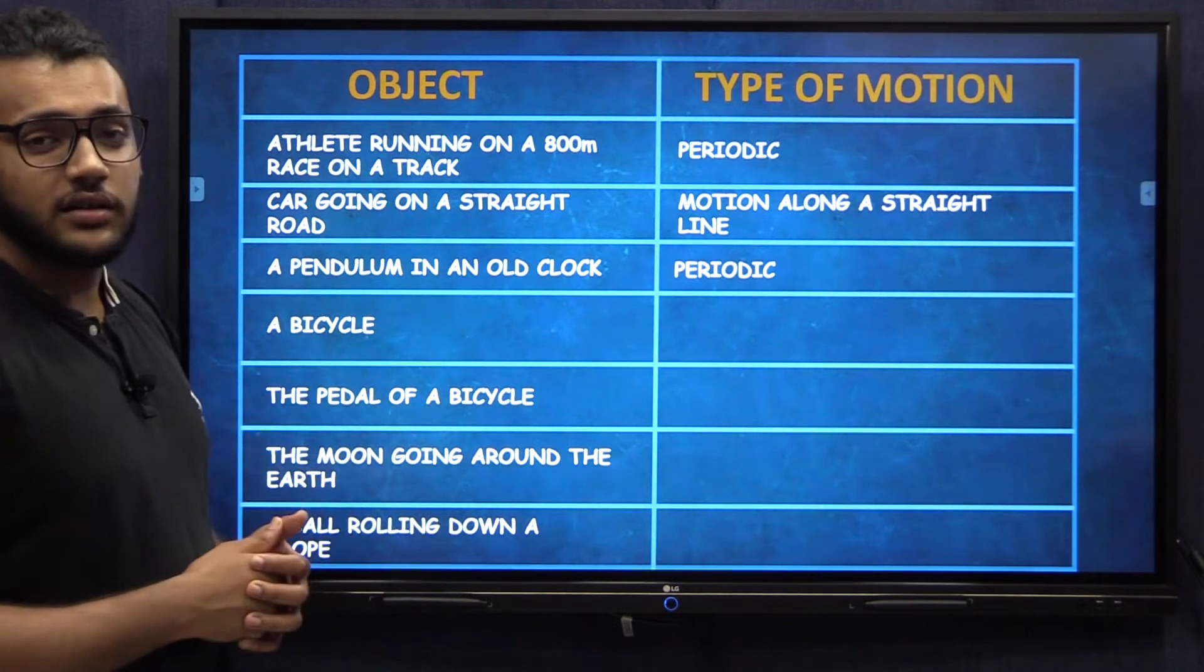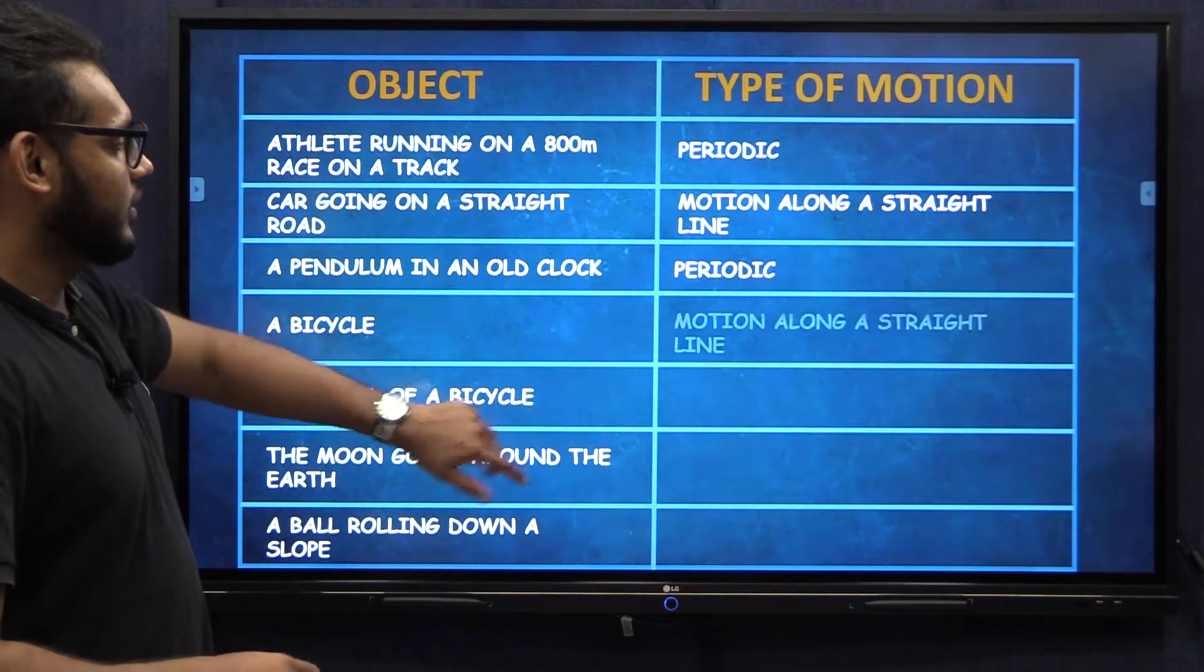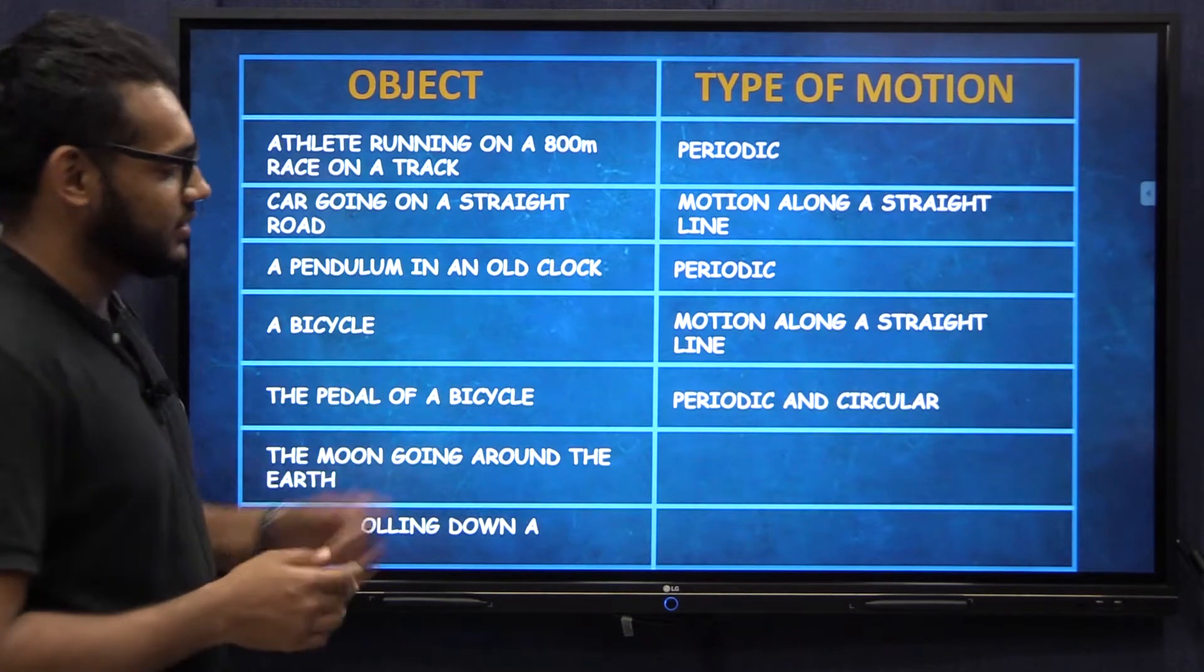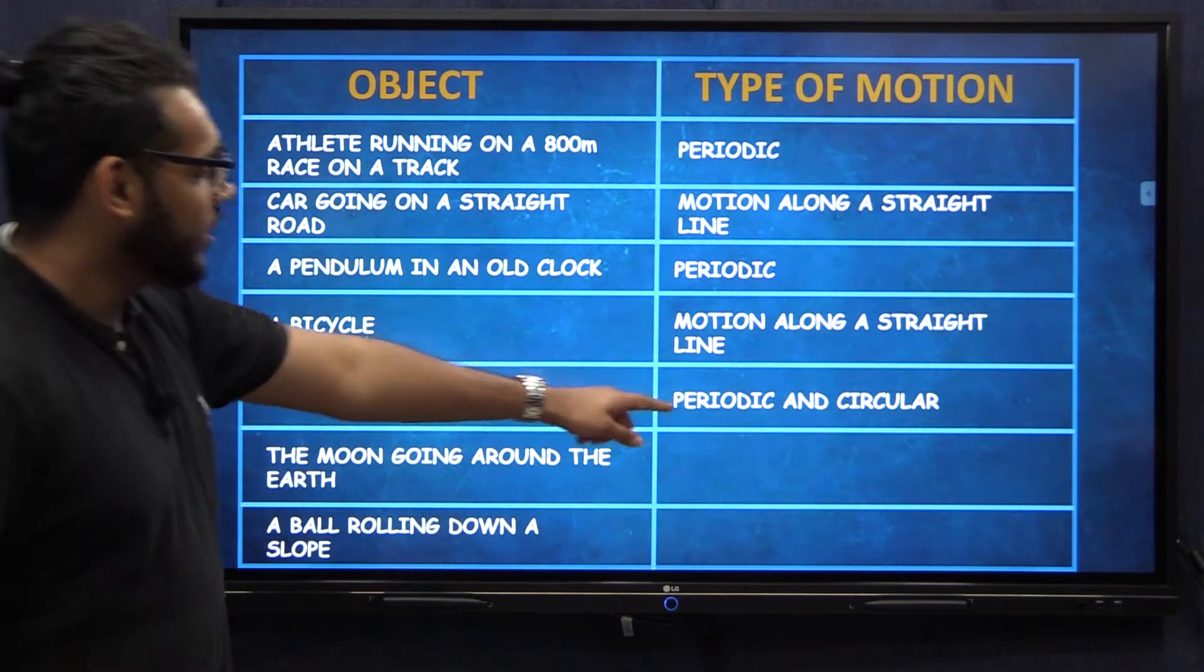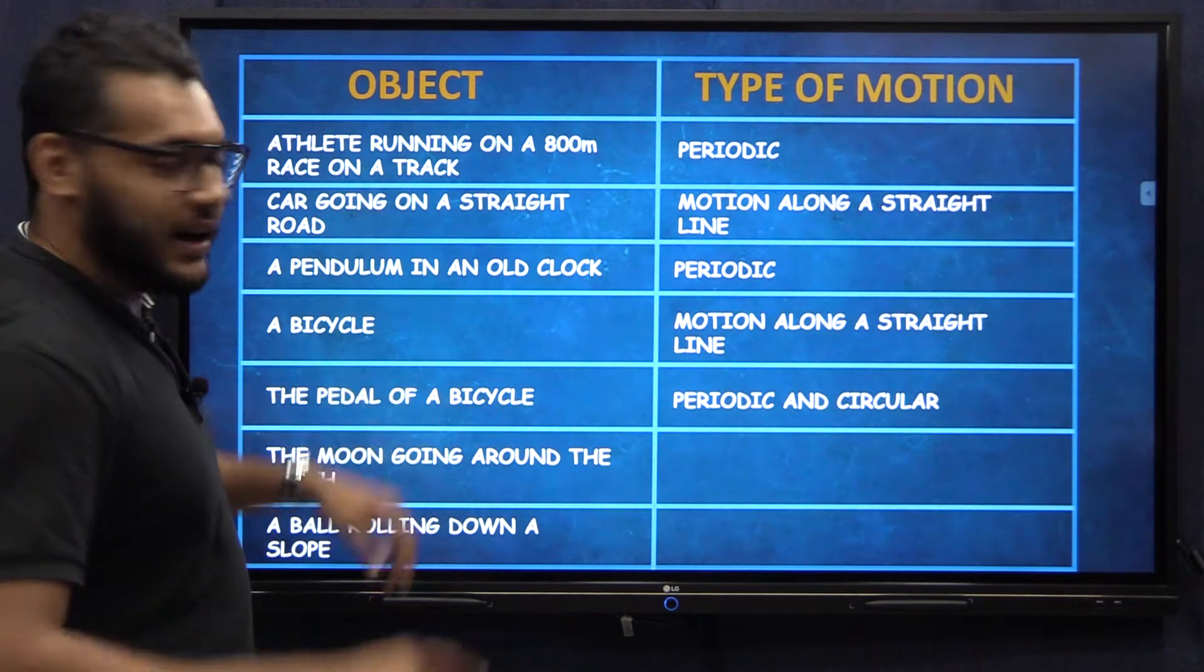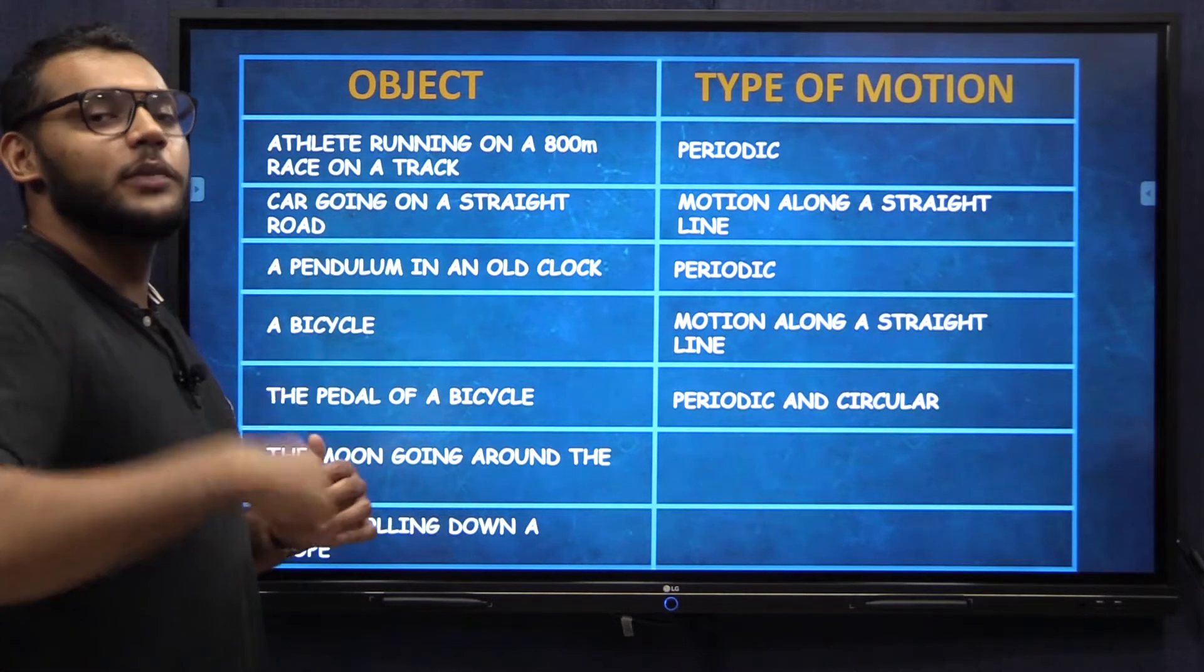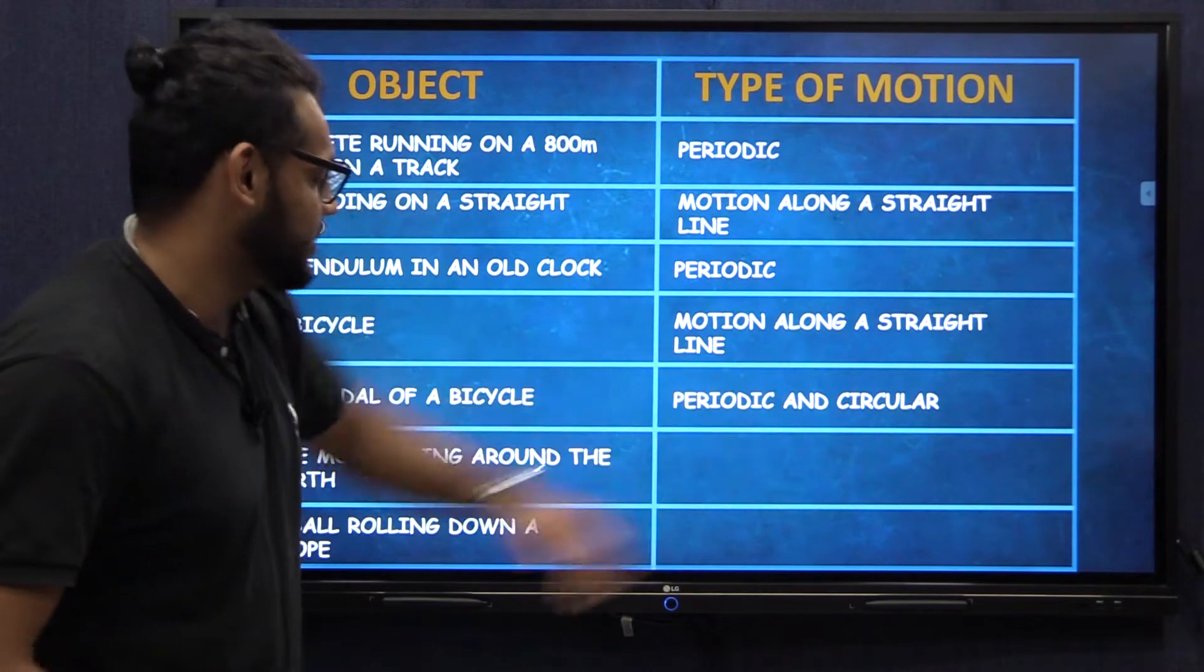Now a bicycle. Motion along a straight line. What about the pedal of this bicycle? It's both periodic and circular. See how there's two different types of motion coming together. The pedal of the cycle is not only going in circles but is also repeating after a period of time. Therefore it is both periodic and circular.